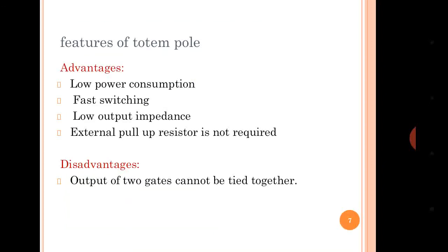What are the features of the totem pole output? Advantages: low power consumption, fast switching, low output impedance, and external pull-up is not required. Disadvantages: the output of two gates cannot be tied together. This is one disadvantage of the totem pole output.